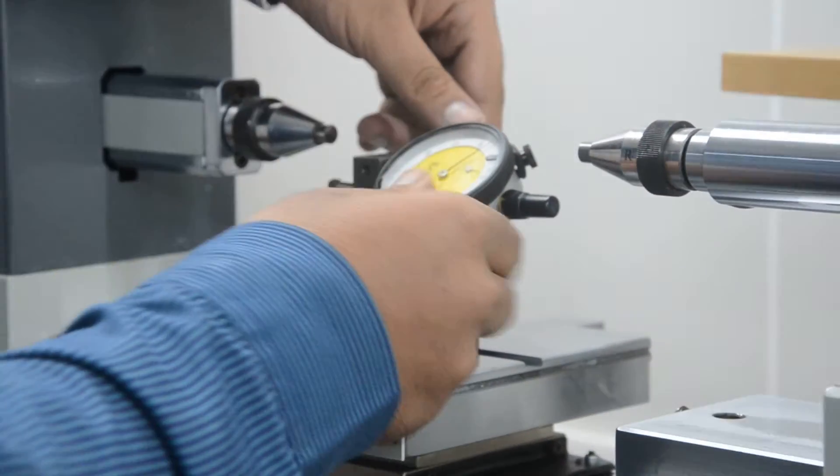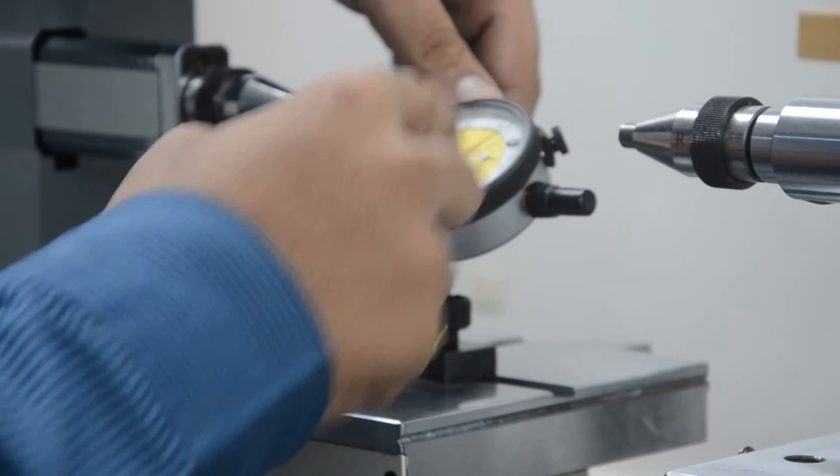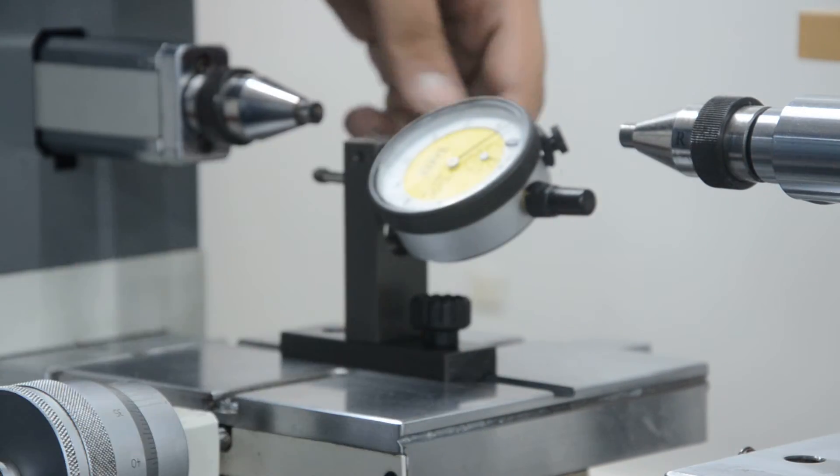The dial should be kept in this position so that it is easy to look at the position of the pointer. Once the position is set, this point has to be tightened.